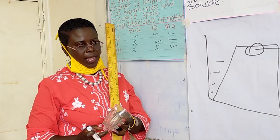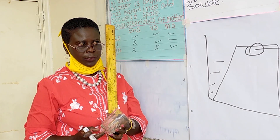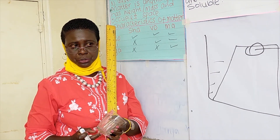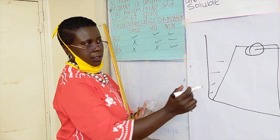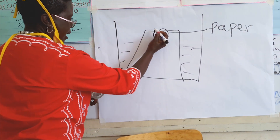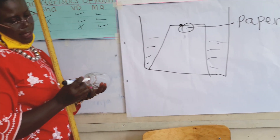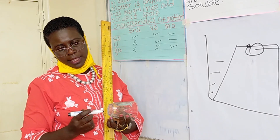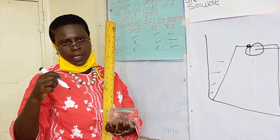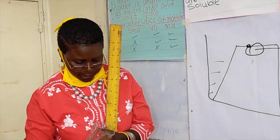Now, if you want water to enter this glass — because that is another question which can be asked — what should you do? You should make a small hole here. If you make a small hole, then the air will escape and the water will enter the glass.